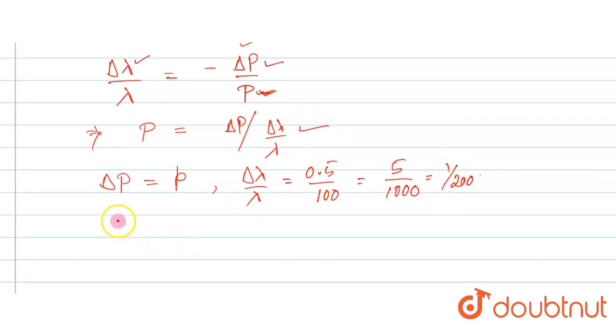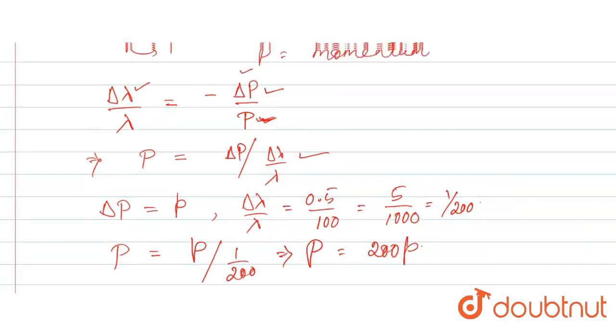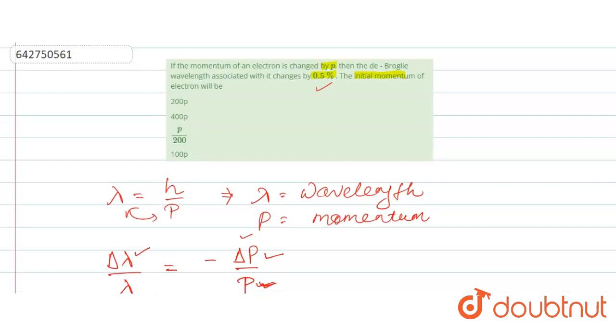So now you can put here, the initial momentum should be equal to delta P, which is your small p, divided by delta lambda by lambda which is 1 by 200. That means the initial momentum is equal to 200 times small p, that means 200 into change in momentum. So the electron's momentum changed by P, then the initial momentum should be 200 P.